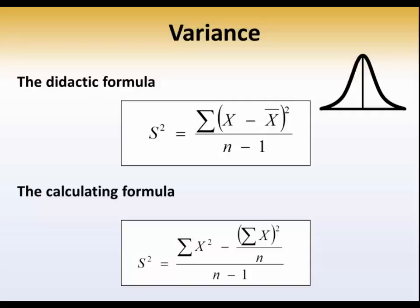The top formula on this page is actually the definitional formula of variance. Notice that the mean is subtracted from each score in the distribution, and that amount of deviation is squared, and that's divided by one less than the number of scores. That's the definition of the variance.